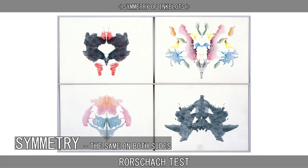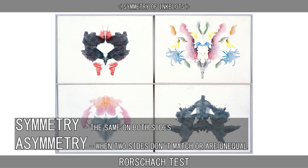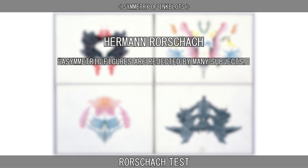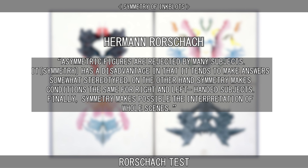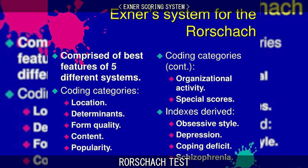A striking characteristic of the Rorschach inkblots is their symmetry. Rorschach experimented with both asymmetric and symmetric images before finally opting for the latter. He gave this explanation for the decision: asymmetric figures are rejected by many subjects and tend to make answers somewhat stereotyped. On the other hand, symmetry makes conditions the same for right- and left-handed subjects, and makes possible the interpretation of whole scenes.